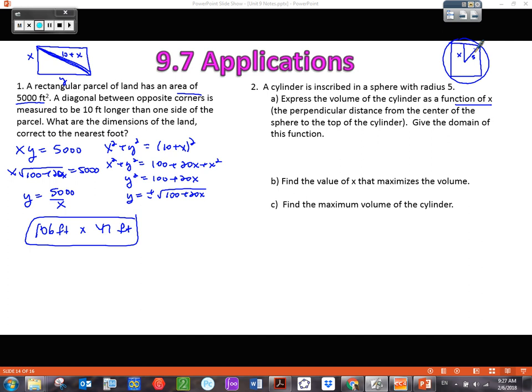They want us to express the volume as a function of x, and they are saying that x is the perpendicular distance from the center of the sphere to the top of the cylinder. So this would be x. That's where x is what we want to use. Let's see what else they want, and then give the domain.